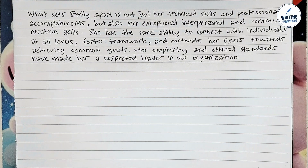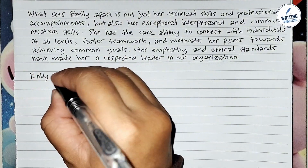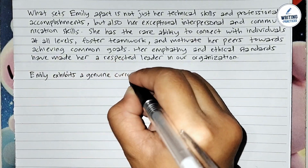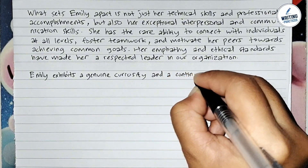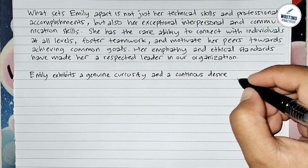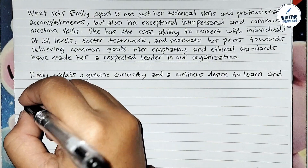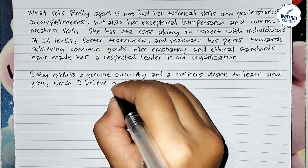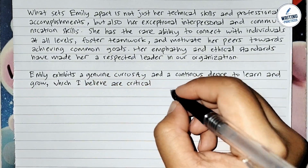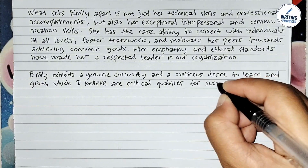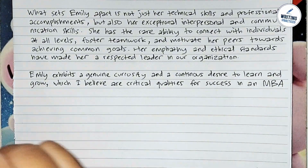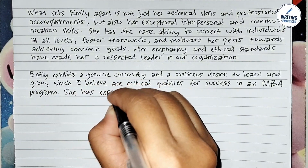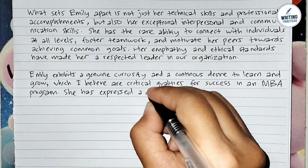In the fourth paragraph, this is where you talk about the candidate's learning and growth. First, write about curiosity and learning — discuss the candidate's enthusiasm for learning and personal growth, and write the relevance to the MBA program. Explain how the candidate's desire to learn aligns with the objectives of the MBA program. For example: 'Emily exhibits a genuine curiosity and a continuous desire to learn and grow, which I believe are critical qualities for success in an MBA program.'